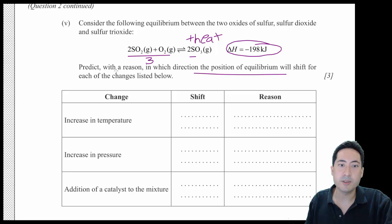If we increase the temperature, we're increasing this side here. If we're increasing this side, it's going to balance and go over here. So the shift will be to the left and the reason will be because it's an exothermic reaction.